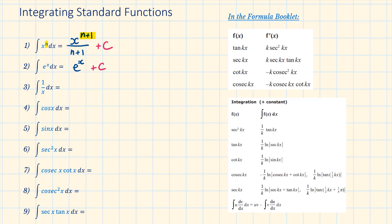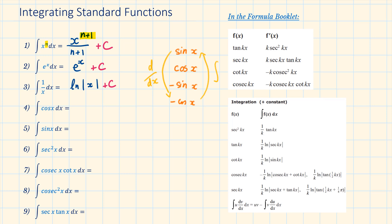Question 3: the integral of 1 over x with respect to x is equal to the natural log of the absolute value of x plus c. Question 4: integral of cos x with respect to x. Integrating sin, cos, minus sin, minus cos is cyclical — going downwards is differentiating, going upwards is integrating. Integrating minus cos x gives minus sin x; integrating minus sin x gives cos x; integrating cos x gives sin x; integrating sin x gives minus cos x. So question 4 is equal to sin x plus c.